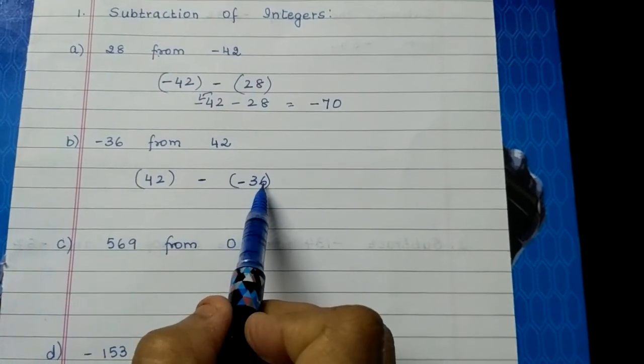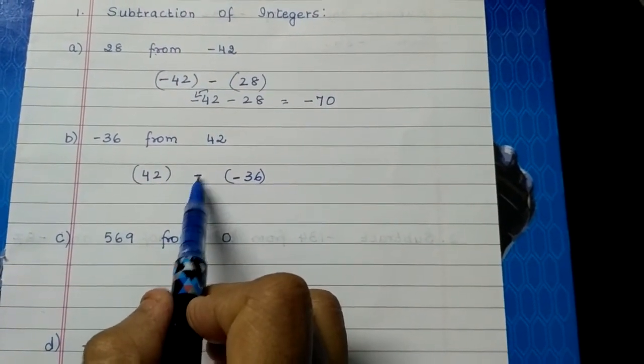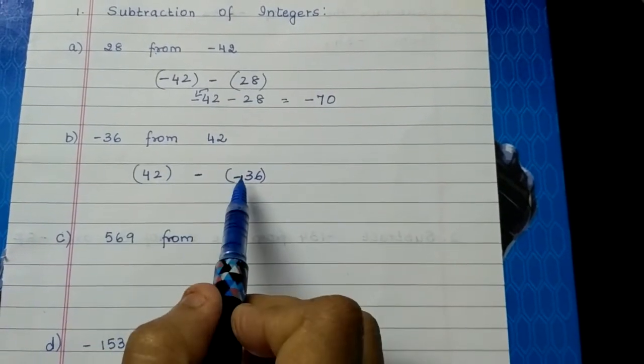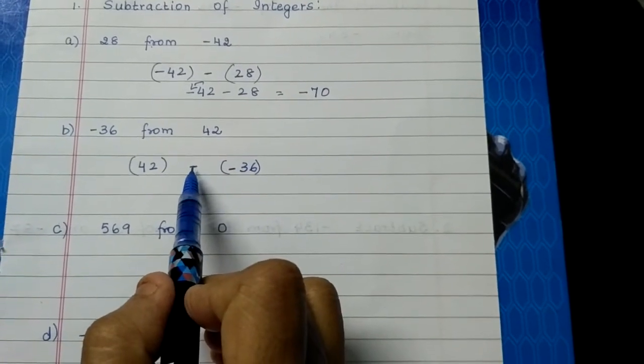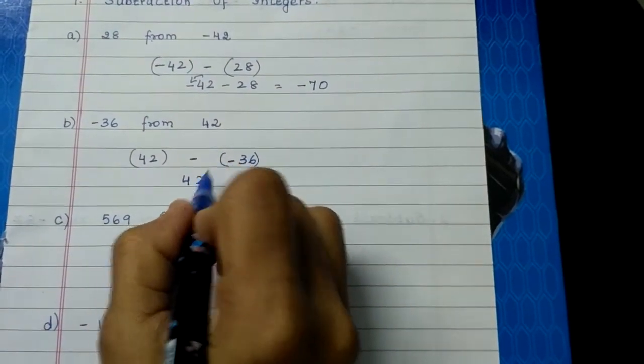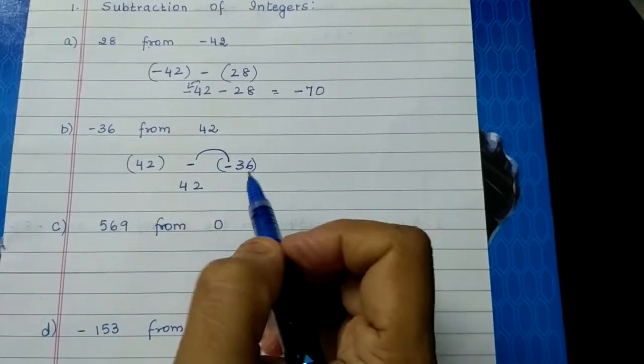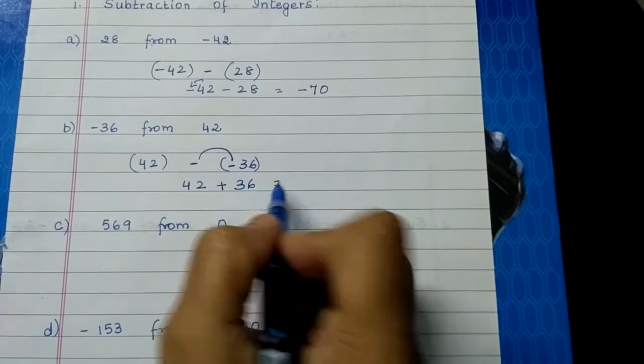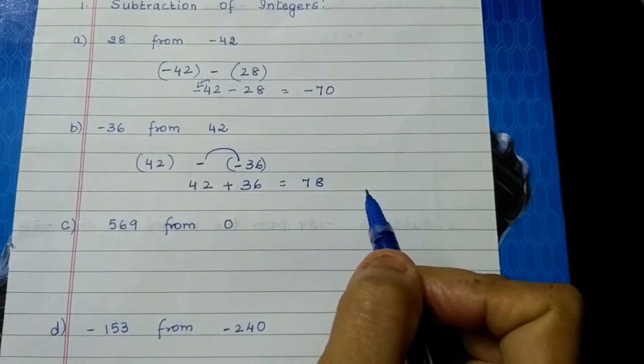Some children think that minus 36 is already there, so we don't need to put a minus sign. Don't do that children. This 42 is a number. In the same way, minus 36 is another number. Now you have to put a minus sign to subtract between these two numbers. So what happens is 42. Now before this number there are two signs, so we have to convert it into one sign. So minus into minus becomes plus. 42 plus 36. Now both are addition, so just add and write the answer.